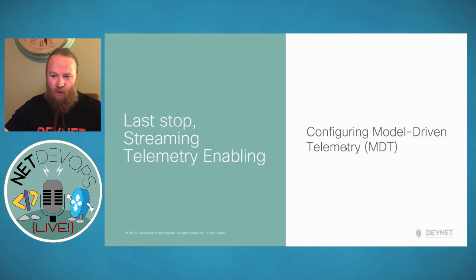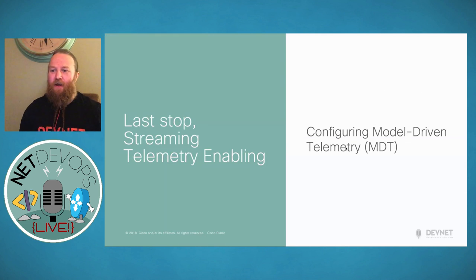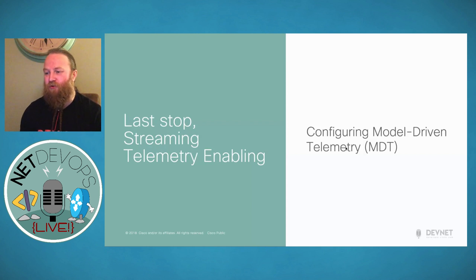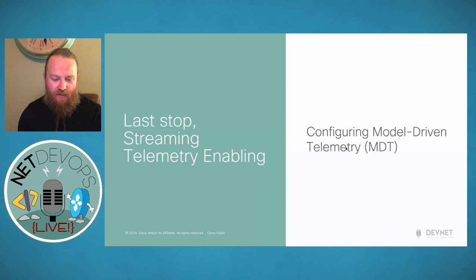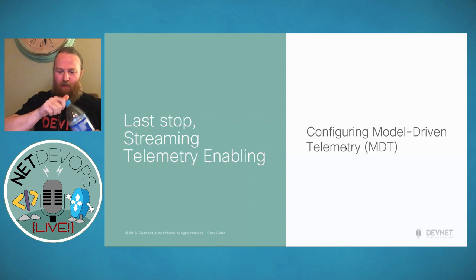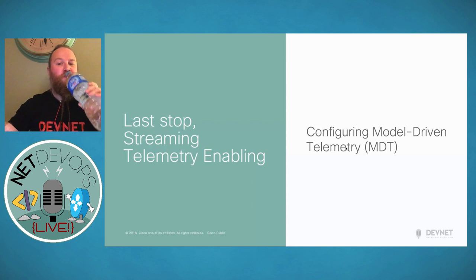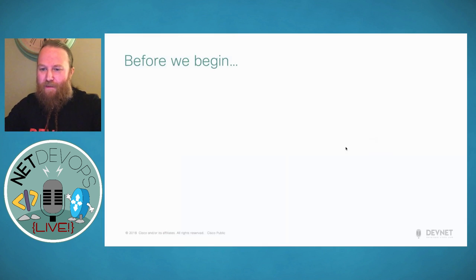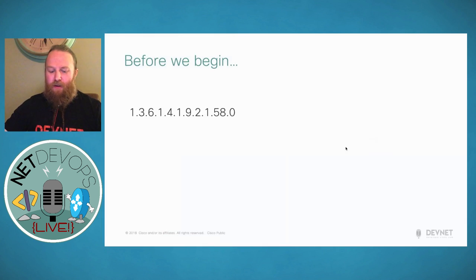Now we're going to talk about configuring model-driven telemetry — MDT. This is the last stop and there's a bit of ground to cover here. Before we begin — is this familiar to people? When I started out my network journey, there was a lot to memorize: RFC 1918 address space, the OSI model, then BGP attributes, the BGP finite state machine, and IPv6 addresses.